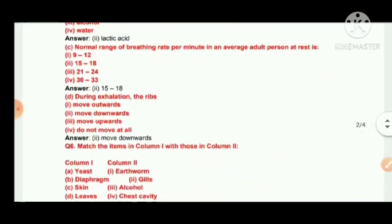Number C, normal range of breathing rate per minute in an adult person at rest is 15 to 18 times per minute.